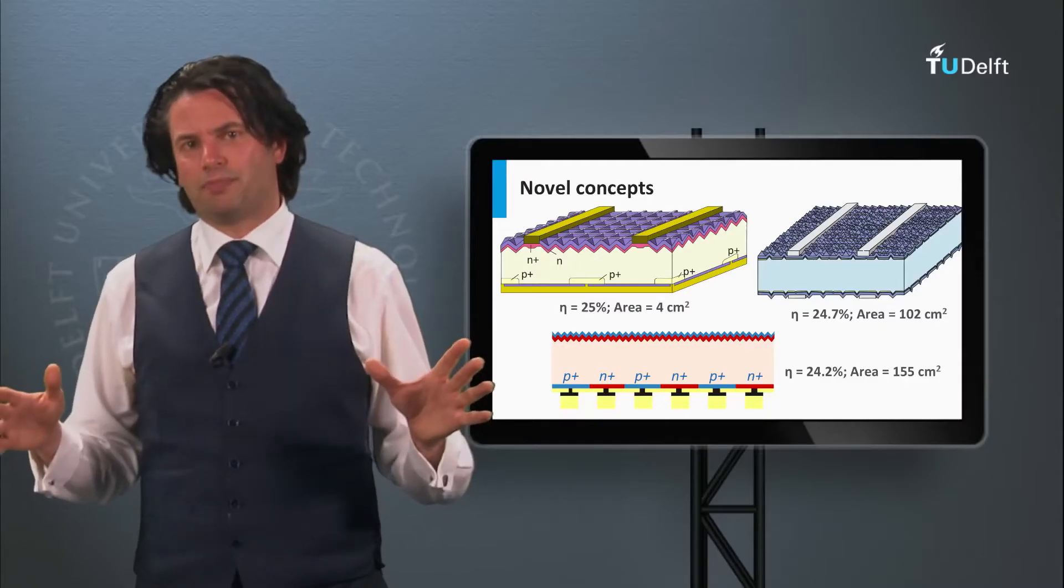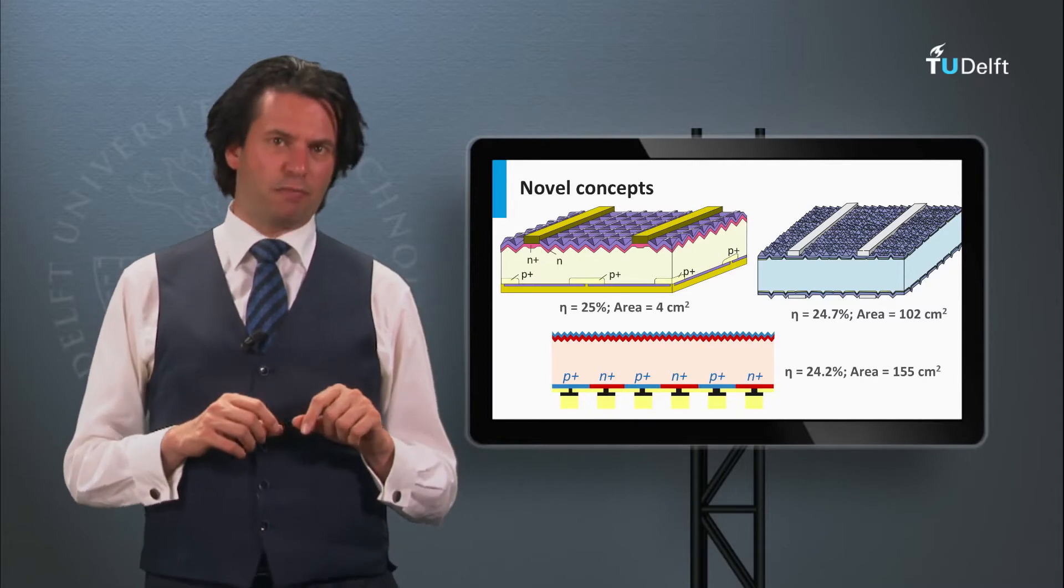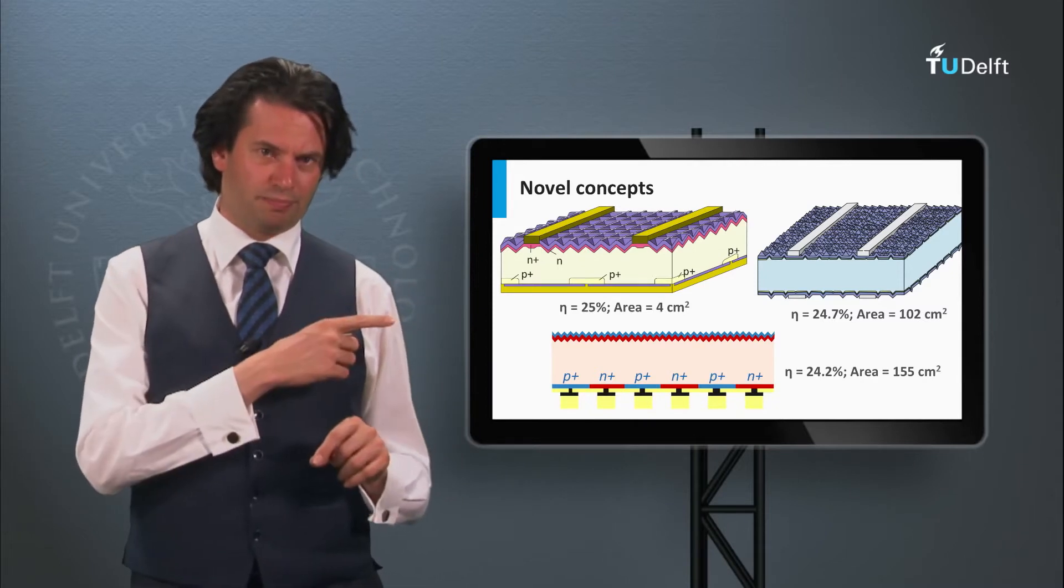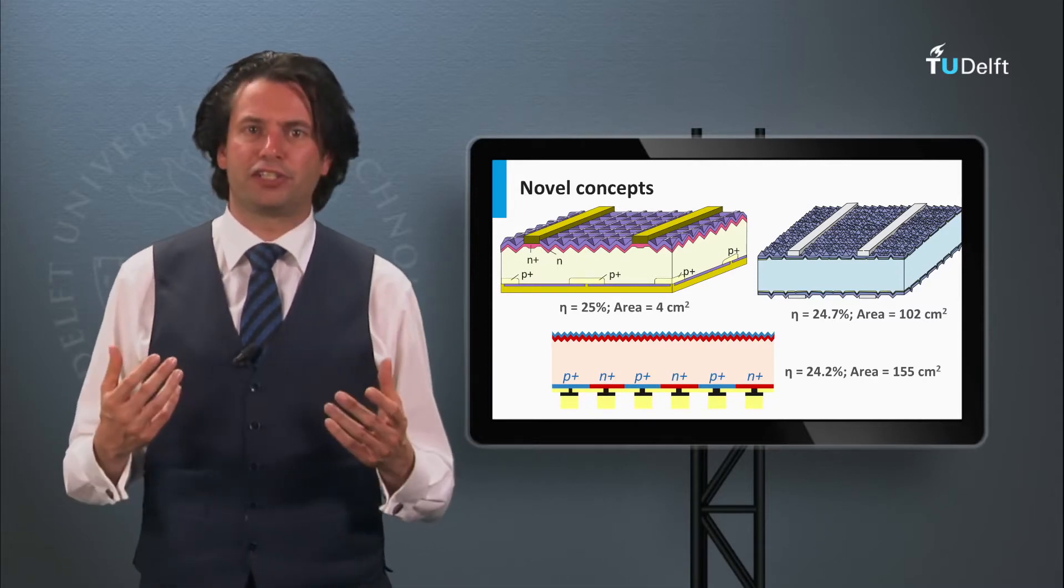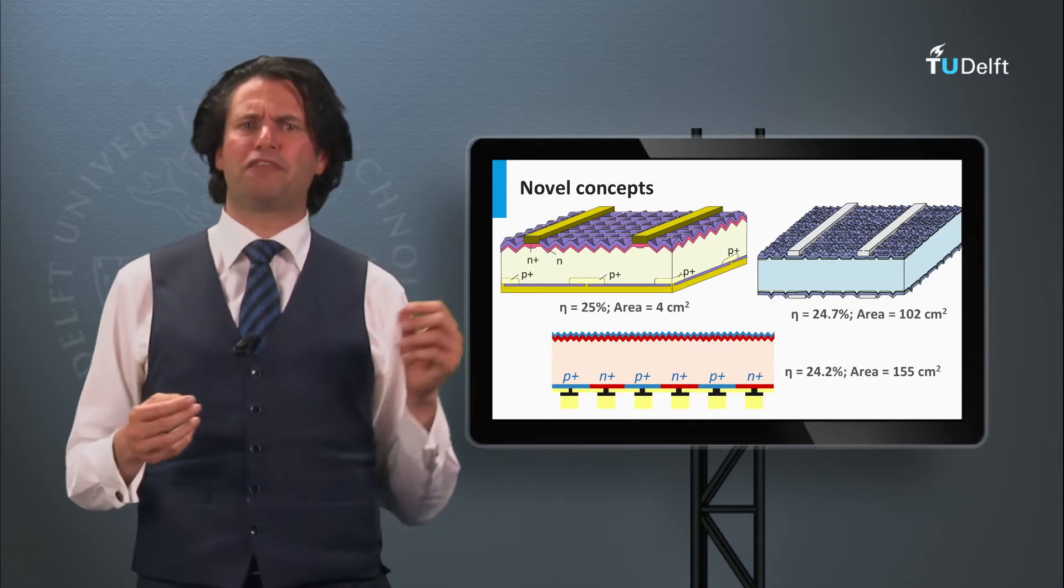Summarized. The high-efficiency crystalline silicon wafer-based solar cells are shown here. The record efficiency of a PEARL solar cell was 25 percent.